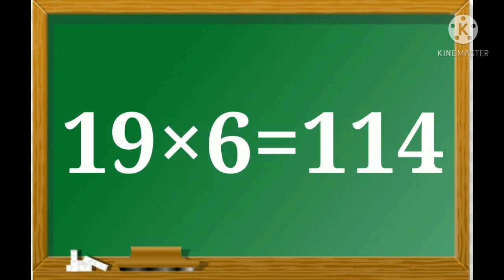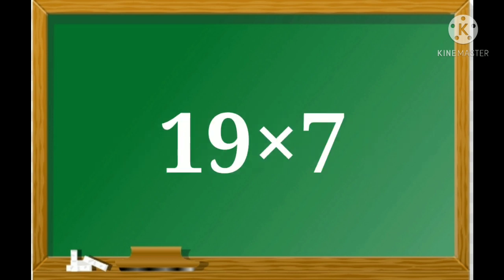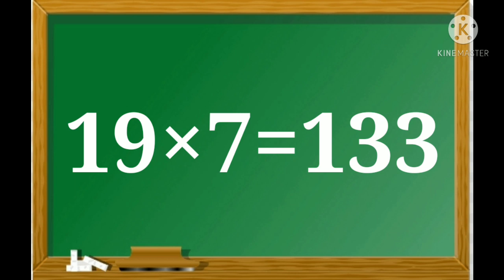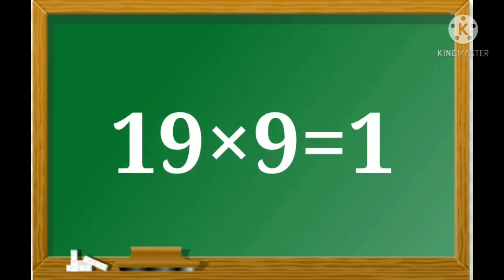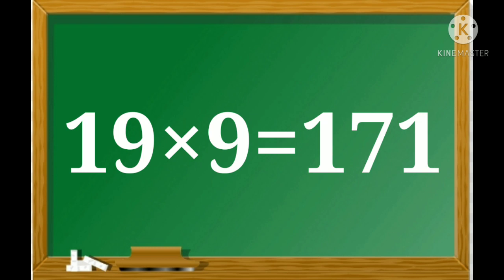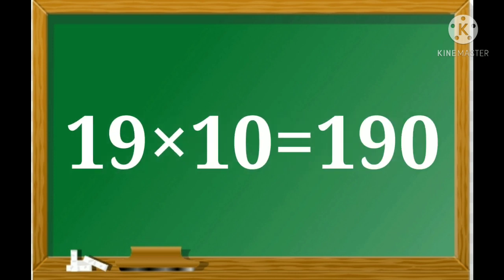19 sixes are 114. 19 sevens are 133. 19 eights are 152. 19 nines are 171. 19 tens are 190.